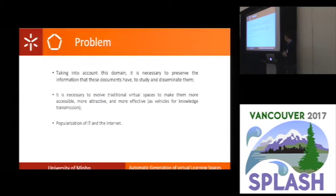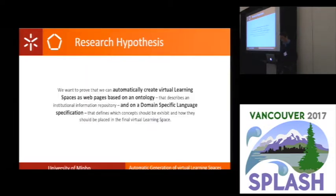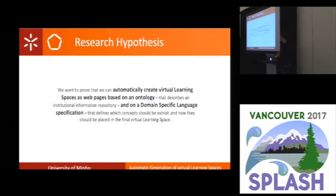Thanks to the popularization of IT and the internet, this is possible because we can have access on any device, anytime. Our motivation is to present an architecture — an approach — for the automatic generation of virtual learning spaces, made up from institutional repositories of memory institutions. We want to prove that we can automatically create virtual learning spaces as web pages, based on an ontology describing an institutional information repository and a domain-specific language specification that defines which concepts should be exhibited in those virtual learning spaces and how they will be placed.